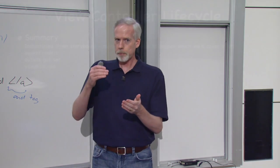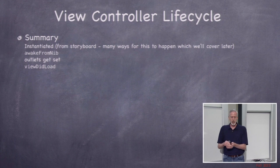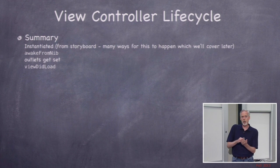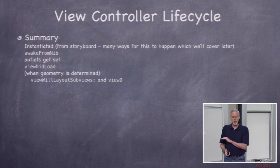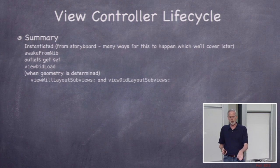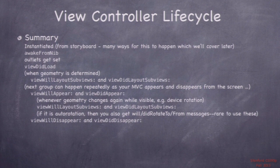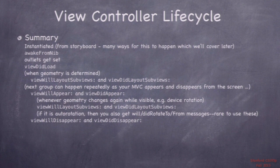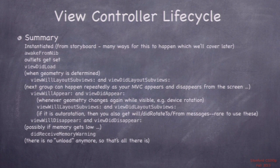Here's a summary of the view controller life cycle: It's instantiated from the storyboard (or someone calls alloc init). awakeFromNib gets called if it came out of a storyboard, otherwise initWithNibName:bundle: gets called. The outlets get set. Then viewDidLoad is called. Then when the geometry is determined, viewWillLayoutSubviews and viewDidLayoutSubviews get called. Then viewWillAppear. Then if the geometry changes again while it's visible, those layout subviews methods get called again. Then viewWillDisappear when your view controller goes off screen. If there's a low memory situation at any time, you get didReceiveMemoryWarning. That's the view controller life cycle from start to finish.